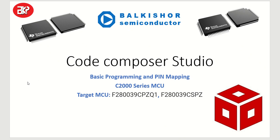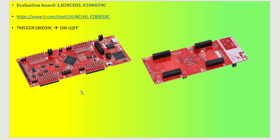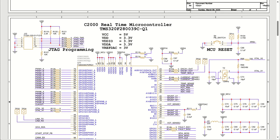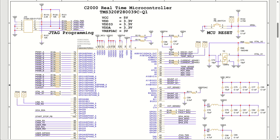Namaskar my dear friends. Let us try to understand how we can configure pins and write basic programs in Code Composer Studio. We have a C2000 series microcontroller, part number F280039CPZQ1. We have a development board available for this package, but we will use our own circuit that we have developed for our system design. This is the C2000 series real-time microcontroller circuit that we have generated.